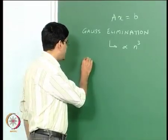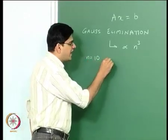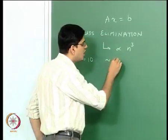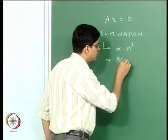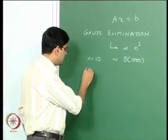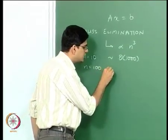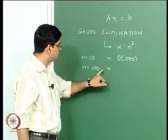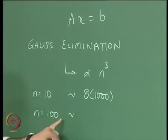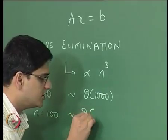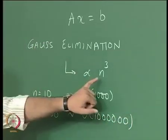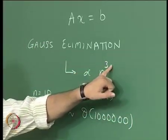For example, if n equals 10, the number of computations required for Gauss elimination are of the order of 1000. However, if we go from n equal to 10 to a slightly larger problem with n equal to 100, the number of computations increases from 1000 to 1 million. That is because Gauss elimination scales as n to the power 3.